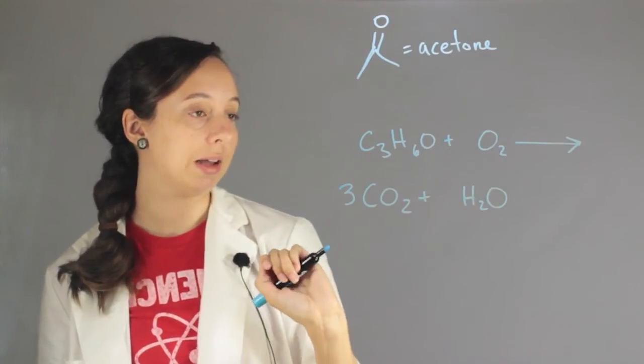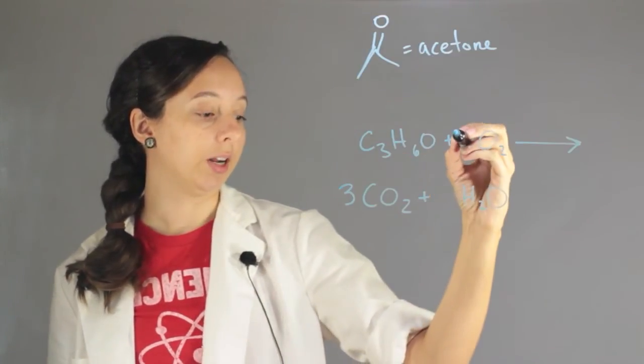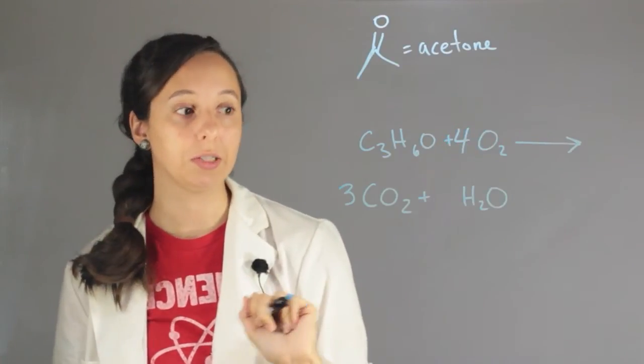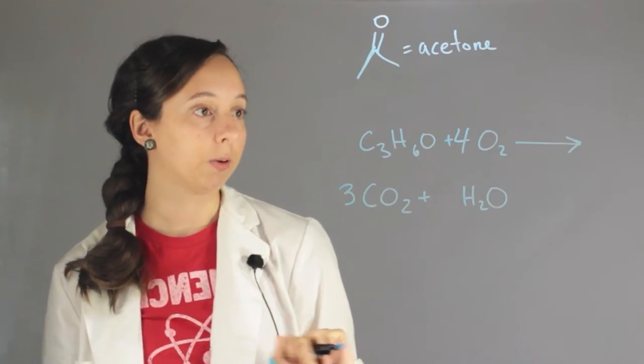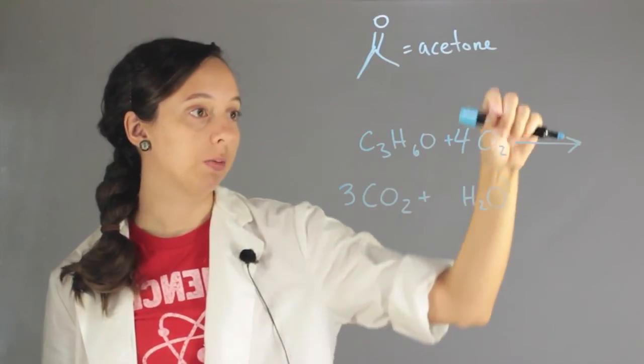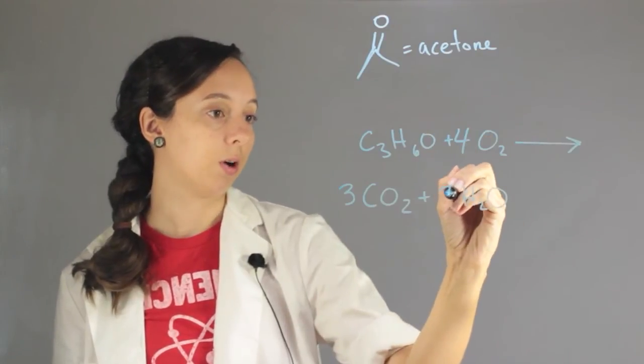So we need to balance this out somehow. And we're going to end up putting a four here. We went through and did all the possibilities. We realized this is right. So if we put a four here, it takes us to a little bit more on the left side. But we're going to balance that out by putting a three right in front of the water.